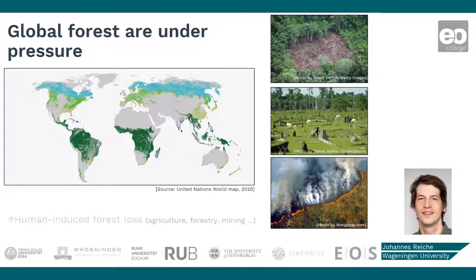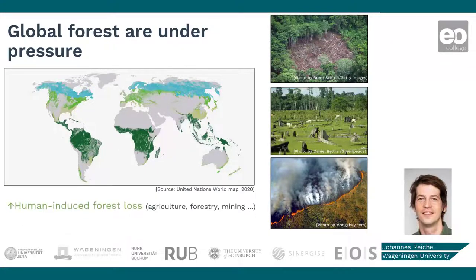Global forest loss is mainly caused by commercial logging, agricultural expansion, but also mining and infrastructure expansion. In particular in the tropics, a significant number of these activities are illegal, such as forest logging without permits. These illegal activities cause a wide range of negative environmental and economic effects.